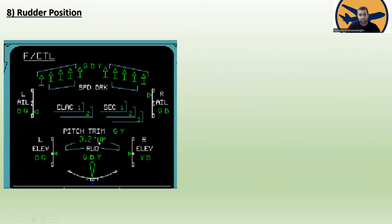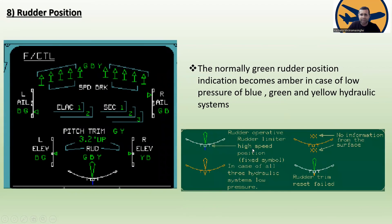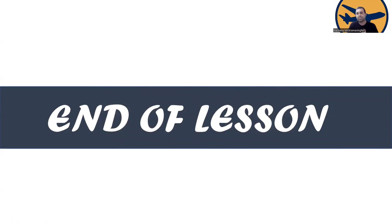Topic eight is rudder position. The rudder has three hydraulic servos: green, blue, and yellow. The rudder position indication is normally green and becomes amber in case of low pressure in any of the three hydraulic systems. There is a white scale with a high-speed position symbol indicating the rudder limiter position. In case of all three hydraulic systems failing or a rudder trim reset failure, specific amber symbols will appear.